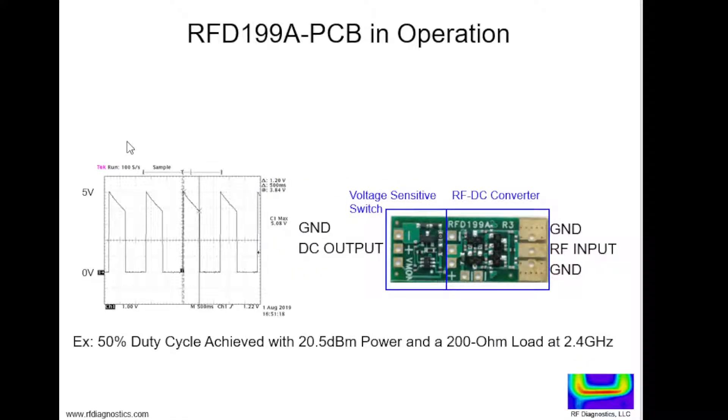The oscilloscope plot on the left shows the charging discharging cycle on the output of the voltage sensitive switch. When the output is 0 volts, the internal RF to DC converter is charging up a capacitor.